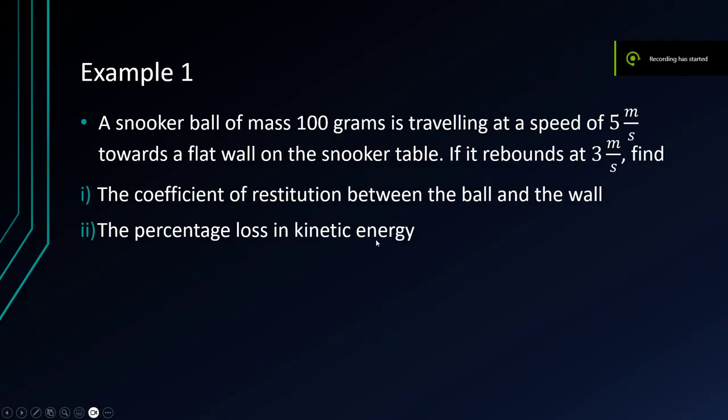Here's an example of utilizing the coefficient of restitution equation. A snooker ball of mass 100 grams is traveling at a speed of 5 meters per second towards a flat wall on the snooker table. If it rebounds at 3 meters per second, find the coefficient of restitution between the ball and the wall and the percentage loss in kinetic energy.